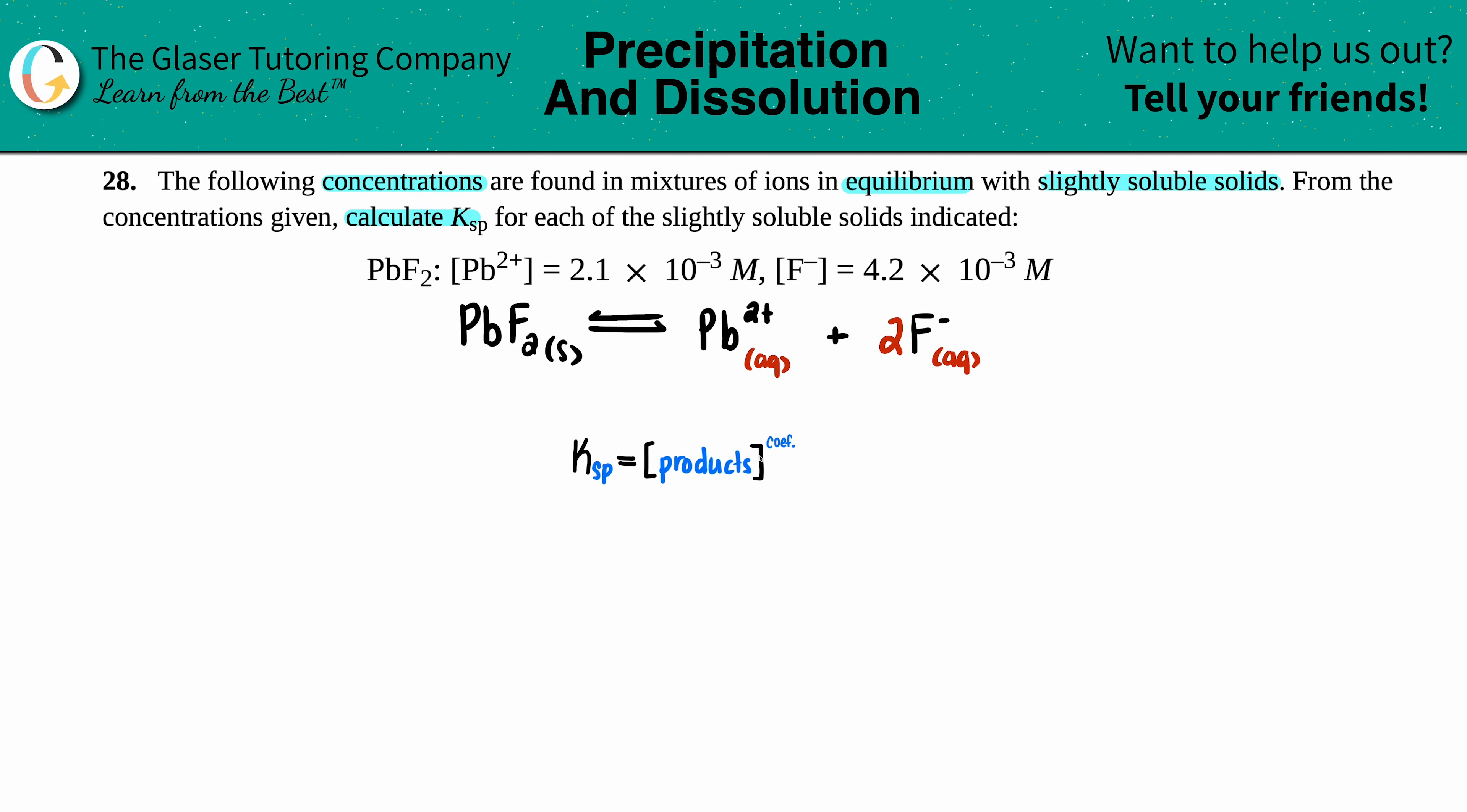So from this equation we can now write our specific Ksp equation. Before we do that, let's just write out the numbers that they give us. Pb2+ they told us was 2.1 times 10 to the negative third molarity, and then the fluoride ion, 4.2 times 10 to the negative third. You do not times this number by two because there's a two in there. Whatever they tell you the concentration is, that's all you got, so you got to work with that.